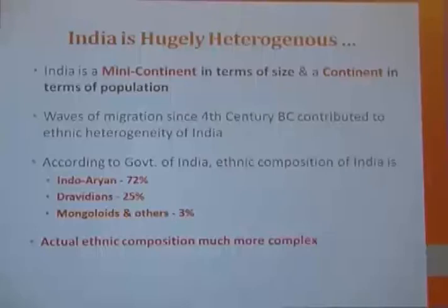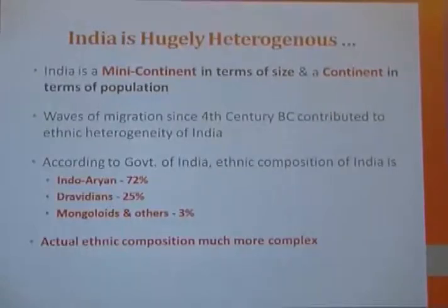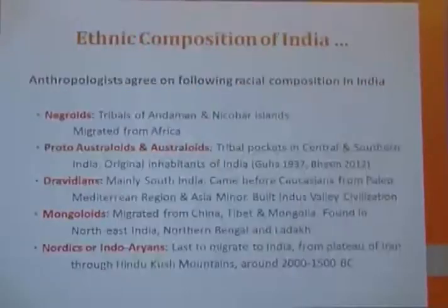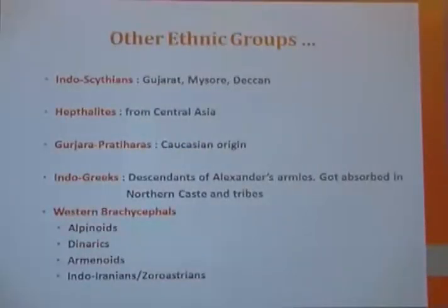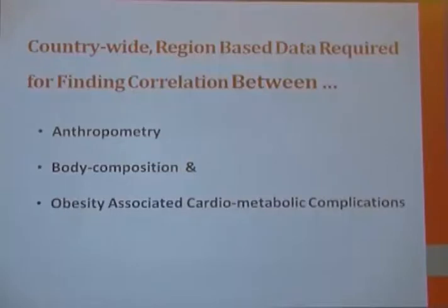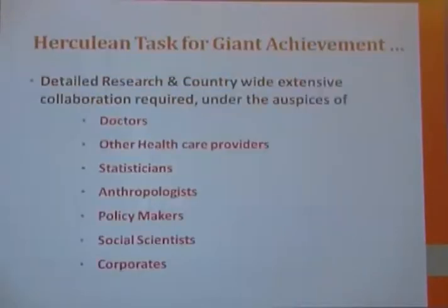India is a hugely heterogeneous country — a mini-continent in size and a continent in population. Waves of migrations have occurred since the 4th century BC. According to Indian government data, there are Indo-Aryans, Dravidians, Mongoloids, and the actual ethnic composition is much more complex, also including Negroids, Proto-Australoids, Nordics, and several other ethnic groups. Countrywide, region-based data is required for finding correlations between anthropometry, body composition, and obesity-associated cardiometabolic complications.